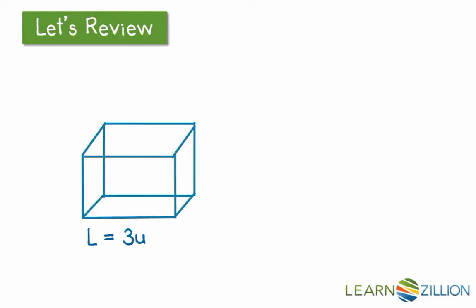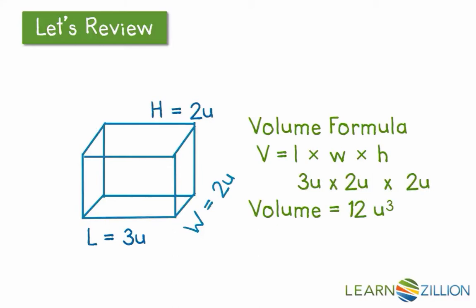To find the volume of a rectangular prism, you multiply its length by its width by its height. We can describe that process by writing the formula length times width times height. And in the formula, you can see that the L stands for length, the W stands for width, and the letter H stands for height. So the answer to this is the volume is equal to 12 units cubed or cubic units.